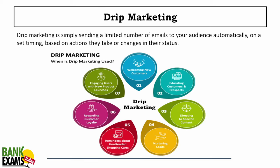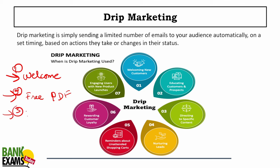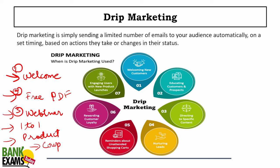Podcast marketing uses podcasts to promote products. Drip marketing is an automated sequence of emails sent on a set timing based on actions: email one is a welcome, email two is a free PDF, email three is a free webinar, email four is one-to-one interaction, then direct product promotion, and finally a coupon if they don't buy. It is automatic, action-triggered email marketing.